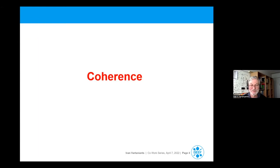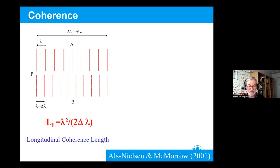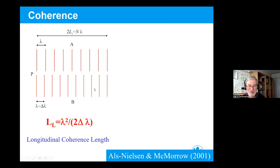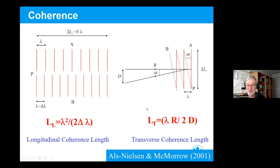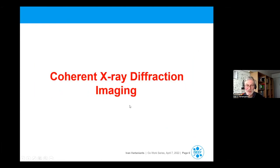About coherence first of all: we know that coherence can be presented in two ways. There is longitudinal coherence, which is about the wavelength difference and is related to the bandwidth of the light. And there is spatial coherence, which will be most important for today's talk, and that comes from the angular size of the source.